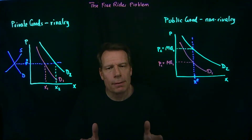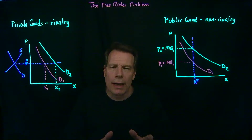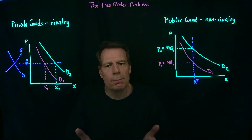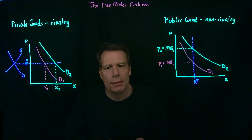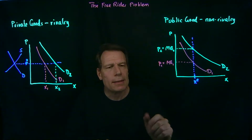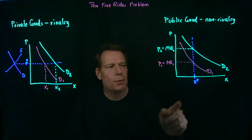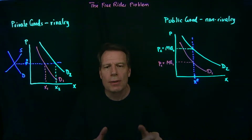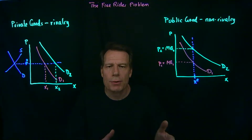Now that we know something about private and public goods, we can ask the question: why is it that we can't just provide public goods in a way that's analogous to how we provide private goods in competitive markets? Why can't we just figure out people's demand curves, and then use those demand curves to figure out the right quantity to produce, so that the sum of the marginal benefits is equal to the marginal cost?